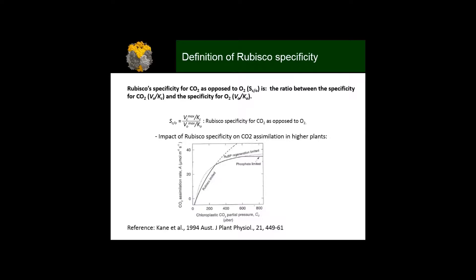Let's move into more of a definition of Rubisco specificity and why we're interested in measuring this parameter. Rubisco specificity for CO2 as opposed to oxygen is really the ratio between the specificity for carbon dioxide and the specificity for oxygen. Rubisco specificity impacts photosynthesis if we look at this CO2 assimilation curve. It impacts the RuBP regeneration limited rate, so in theory a higher Rubisco specificity should enable us to increase that RuBP regenerated rate.